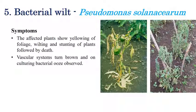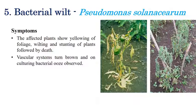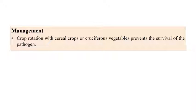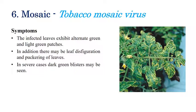The next disease is bacterial wilt, caused by Ralstonia solanacearum (also referred to as Pseudomonas solanacearum). Symptoms include wilting and stunting of plants and plant death. Unlike fungal wilt, yellowing is not prominent in early stages. A key diagnostic character is that when the stem is cut open, a white or brown bacterial ooze can be seen. Crop rotation with cereal crops or cruciferous vegetables is the best management practice.